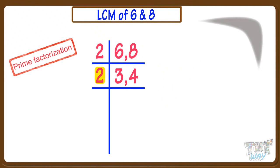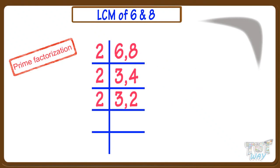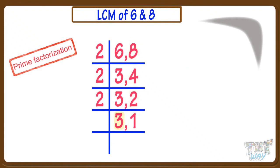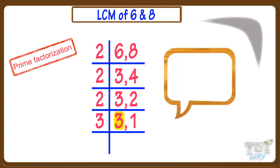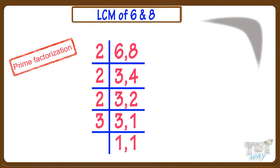If any number cannot be divided by 2, write it as it is. So write 3 as it is, put a comma. Now 4 divided by 2 equals 2, so write 2. Now again, try dividing the numbers by 2. Again, 3 cannot be divided, write it as it is. 2 divided by 2 equals 1, write 1 here. Now only 1 number, that is 3, is left. It cannot be divided by 2, so take the next smallest prime number, which is 3. Now 3 divided by 3 equals 1 — write 1, put comma, and bring down 1. Now every number is reduced to 1.